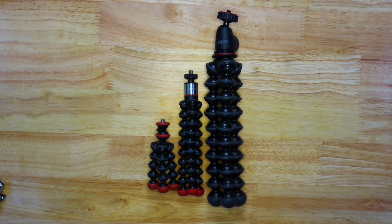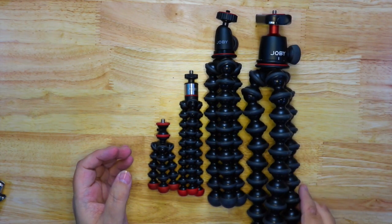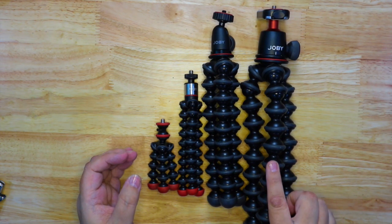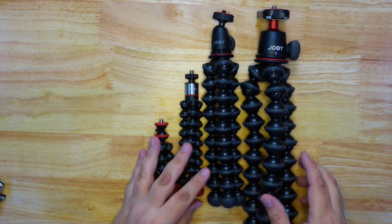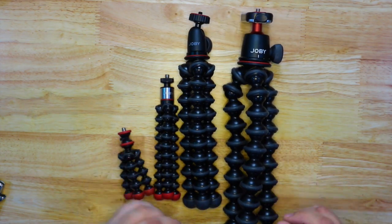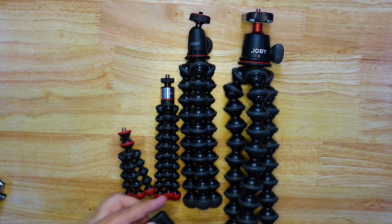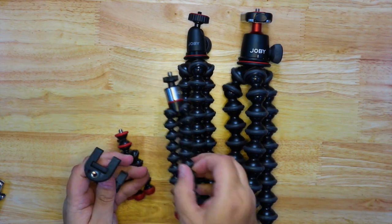So I'll try to get an image here of the four Gorillapods together. You've got the Mini, the 325, the 1K and then this is the 3K. I believe they also make a 5K one which has got longer legs still and can take five kilograms. But these are the ones that I use because I use fairly light cameras.